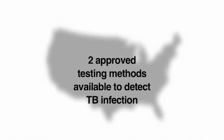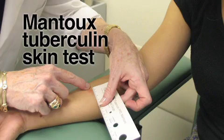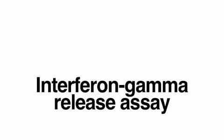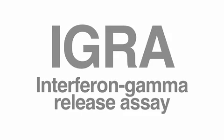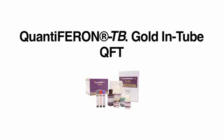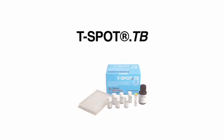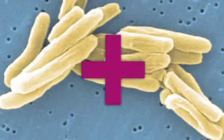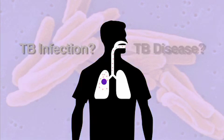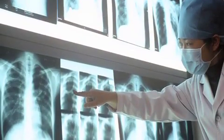Check the resources list to see a sample risk assessment tool. There are two approved testing methods available to detect TB infection in the U.S. The first is the Mantoux tuberculin skin test, also called the TST. The second is the interferon gamma release assay, also called IGRA. There are two IGRAs approved for use in the U.S.: QuantiFERON-TB Gold In-Tube, also called QFT, and the T-SPOT.TB. These tests will be discussed in more detail in the video on diagnosis. A positive TB skin test or blood test tells only if a person has been infected with TB bacteria. It doesn't tell whether the person has TB infection or has progressed to TB disease, which requires a clinical evaluation.